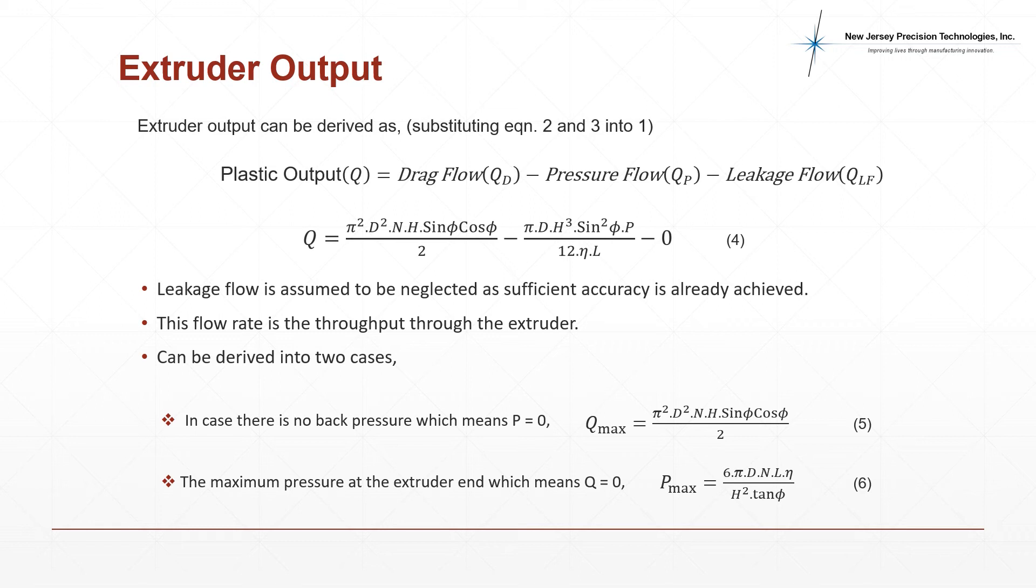This equation can be further derived into two extreme cases. Where back pressure equals zero, which is the condition for ideal maximum extrusion throughput, equation 5 can be derived by substituting P equals zero in equation 4. Where back pressure is maximum, meaning there is no output from the extruder, equation 6 can be derived by substituting Q equals zero in equation 4.